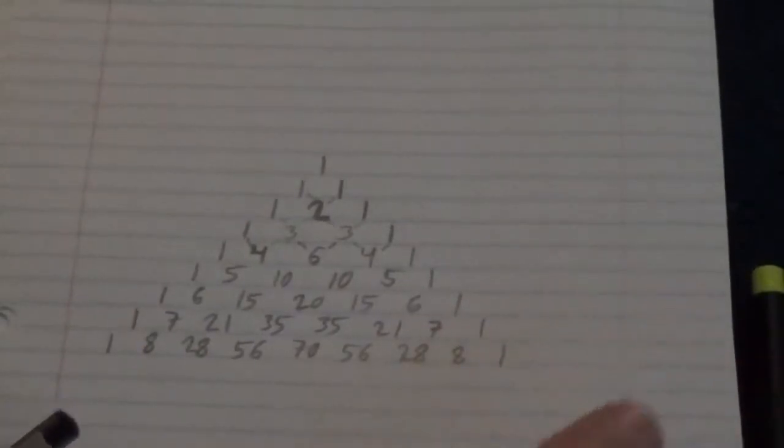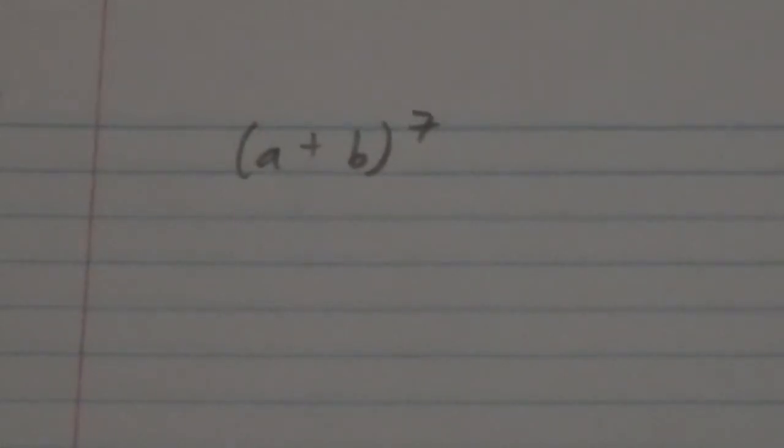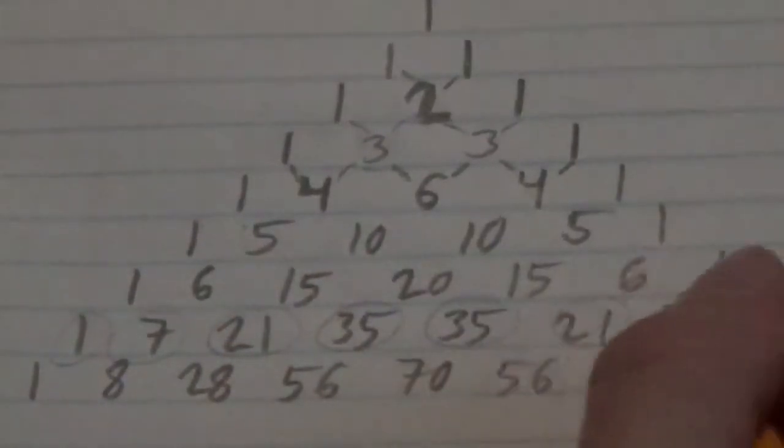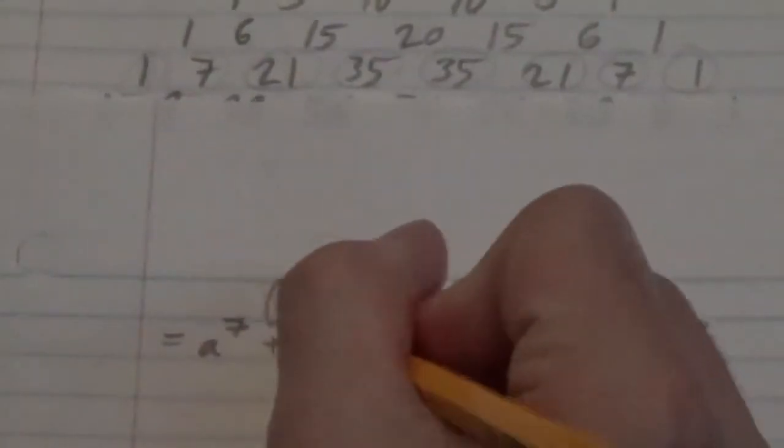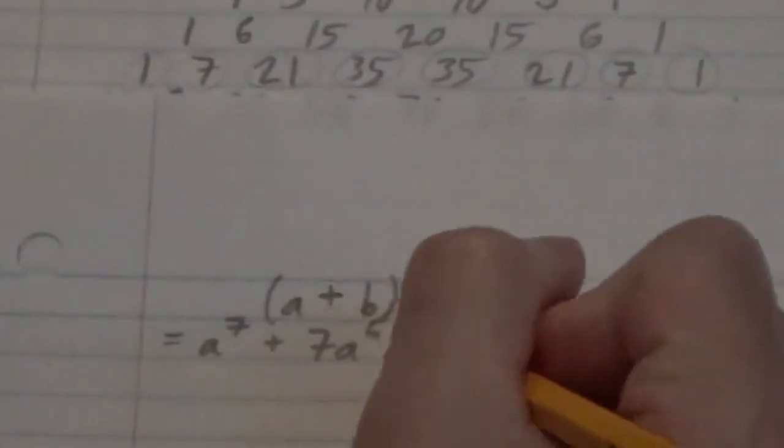For instance, if we have something like the quantity a plus b to the seventh, and we wanted to basically simplify this expression here, or expand it to see what this actually equals, we can use Pascal's Triangle. And what we would do is actually look at this seventh row and use these numbers as the coefficients of each term of the expansion. So, we would have a to the seventh, since this first coefficient is one, and then we'd say plus seven a to the sixth times b, plus, and then we'd go to the next coefficient,